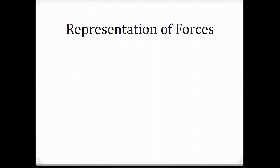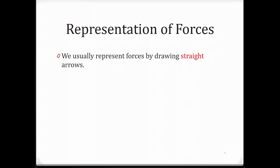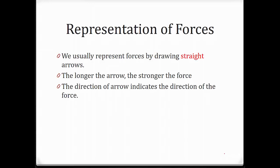How do we represent forces? We usually represent forces by drawing straight arrow diagrams. The longer the arrow, the stronger the force. The direction of the arrow indicates the direction of that force. If we have two arrows, a shorter arrow represents a weaker force compared to a longer arrow. For example, this could represent 4N and this could represent 8N — a longer arrow represents a stronger force.